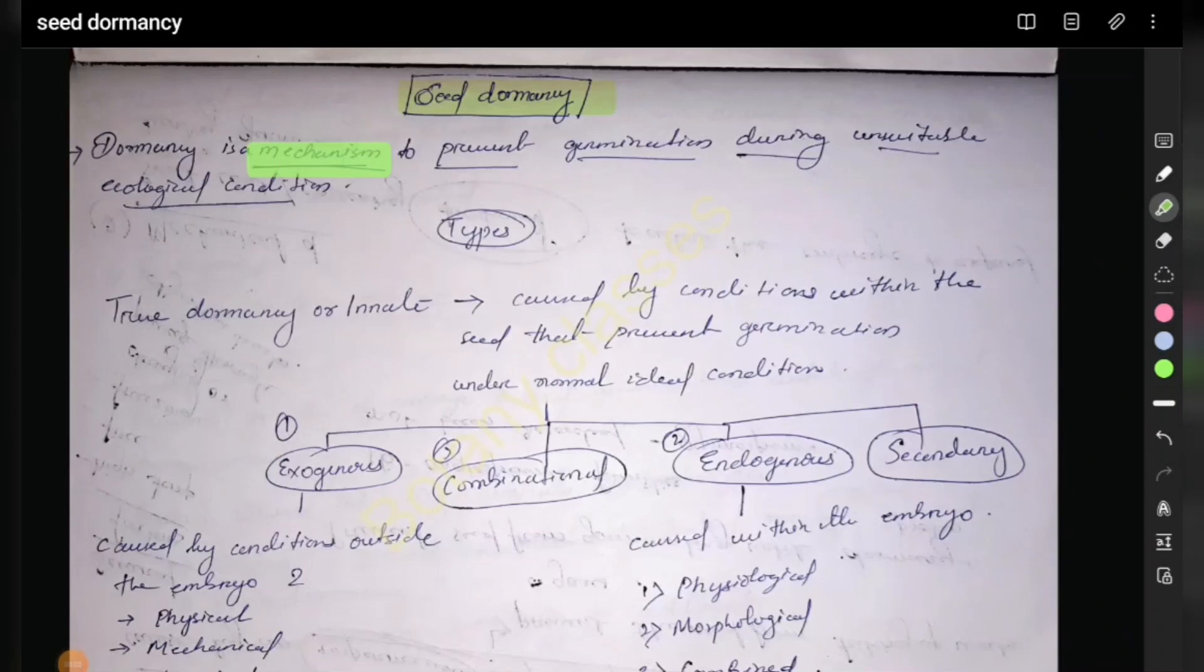Dormancy is a mechanism to prevent germination during unsuitable ecological conditions. There are types of dormancy that prevent germination under normal ideal conditions.